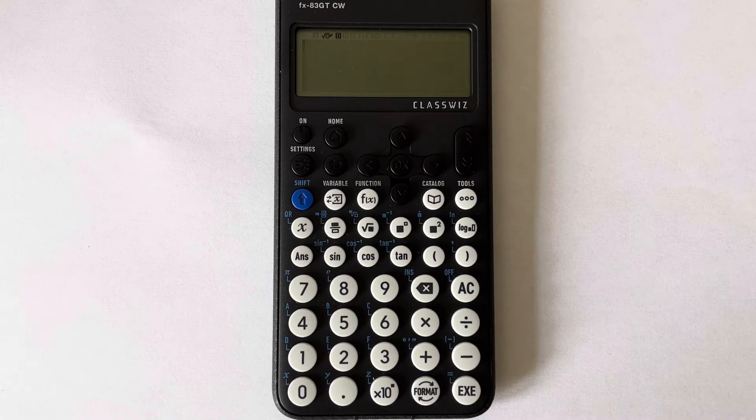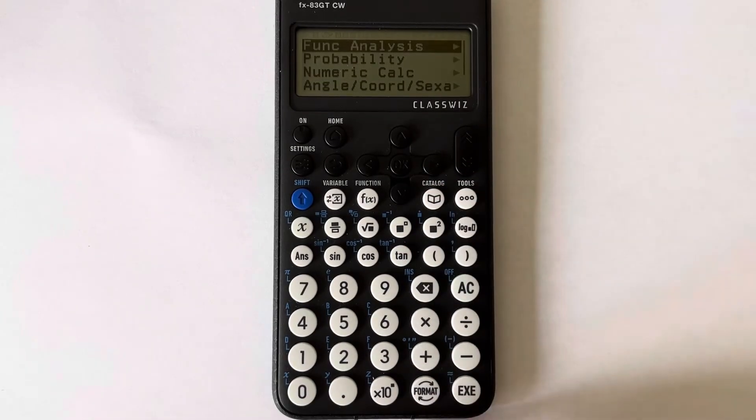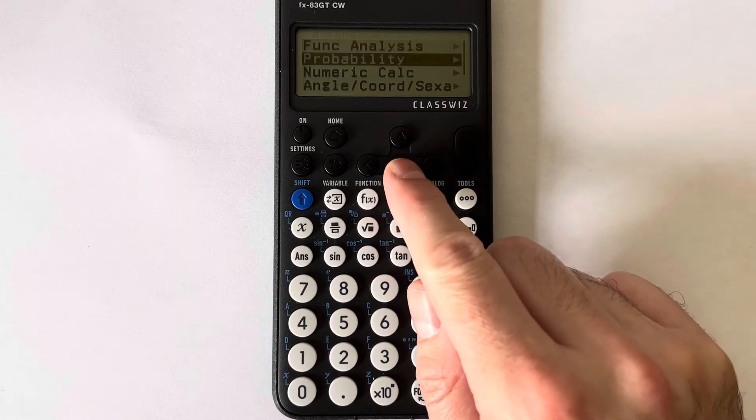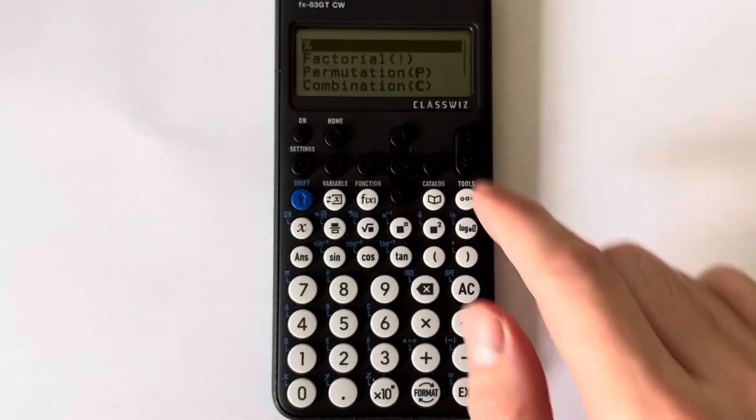But the good news is it is actually one of the menus. To get the percent sign up, you press catalogue, scroll down to probability, press OK, and there you go, there's the percent sign.